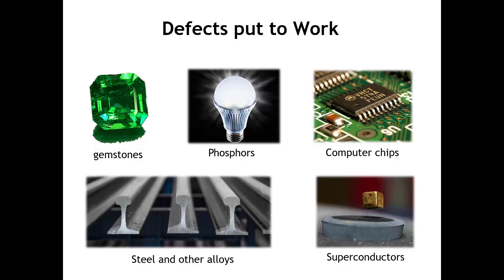If we were to think about mechanical properties, we could talk about the difference between the mechanical properties of pure iron and the mechanical properties of steel. And steel has superior mechanical properties, and those properties come from the presence of defects in the iron.